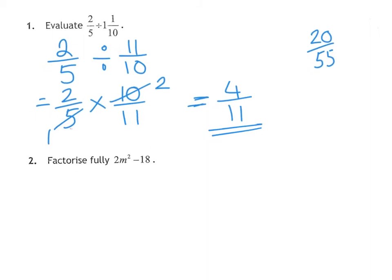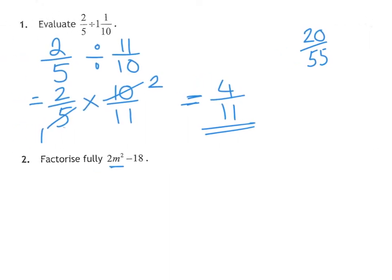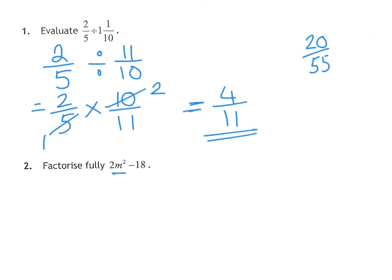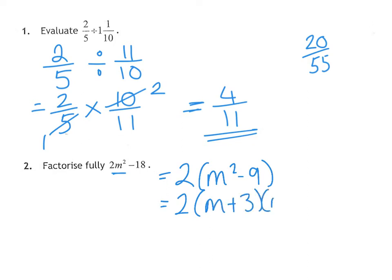Question 2 says factorise fully. The word 'fully' means there's a bit extra to it — it's also worth 2 marks, so more than one line of working. First, notice there's a common factor of 2. Taking out 2 leaves m squared minus 9. Always check the bracket: m squared minus 9 is the difference of two squares. Square root of 9 is 3, so that factorises as (m + 3)(m − 3). Factorise fully means there's more to it than just a common factor — just a common factor is National 4 level.